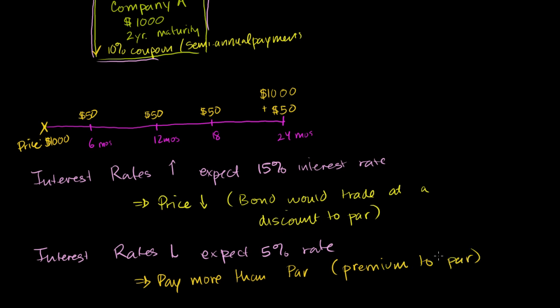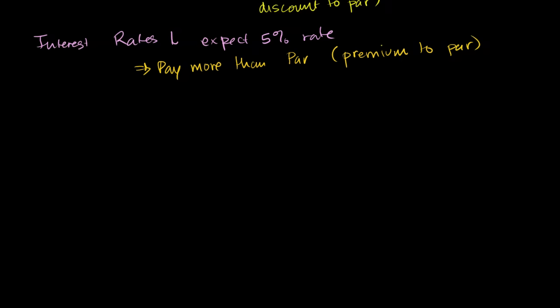So at least in the gut sense, when interest rates went up, people expect more from the bond. This bond isn't giving more, so the price will go down. Likewise, if interest rates go down, this bond is giving more than what people's expectations are, so people are willing to pay more for that bond. Now let's actually do it with an actual bond. Let's do the math to figure out the actual price that a rational person would be willing to pay for a bond given what happens to interest rates. To do this, I'm going to do what's called a zero-coupon bond.